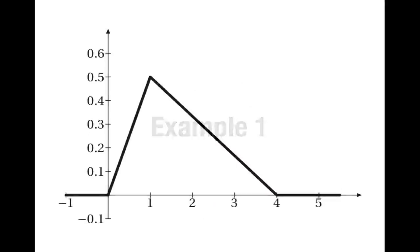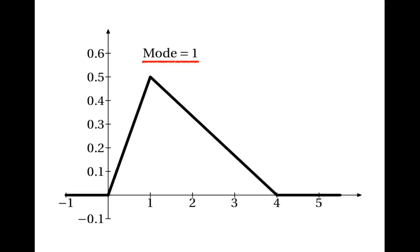First of all, what do you think is the mode in this case? This is the graph of the probability density function. Well, the mode is 1 because that's the place with the highest probability density — it's the x-coordinate of the highest point on the graph.